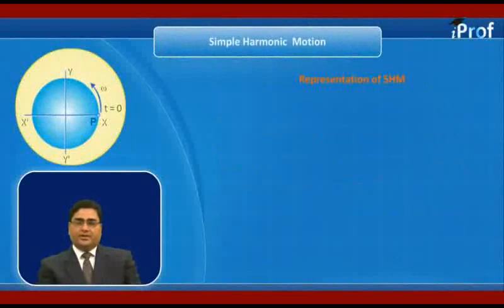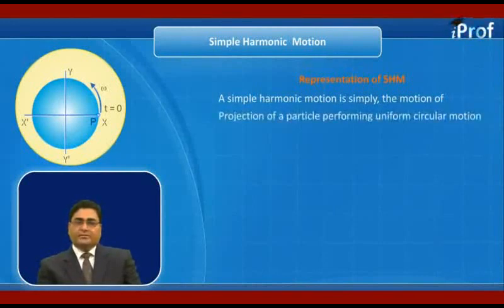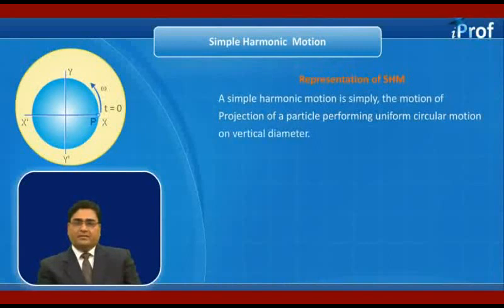How can we represent simple harmonic motion? As shown in the figure, a simple harmonic motion is simply the motion of the projection of a particle performing uniform circular motion on the vertical diameter.